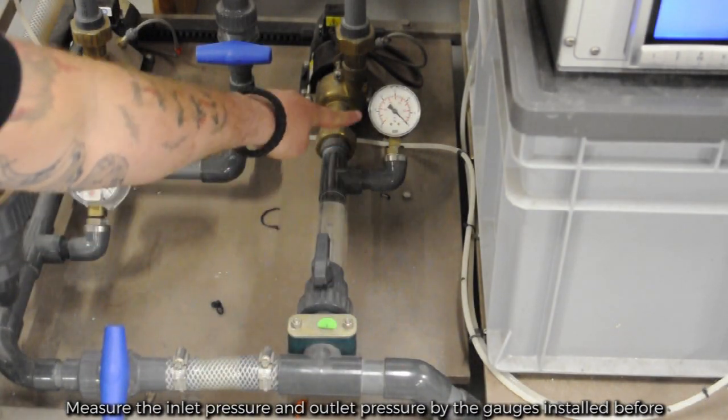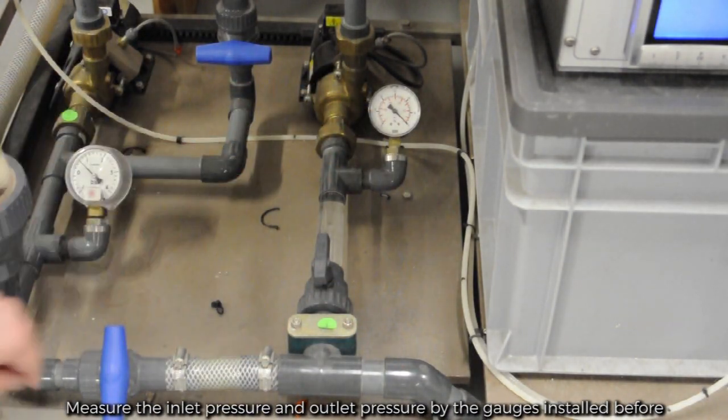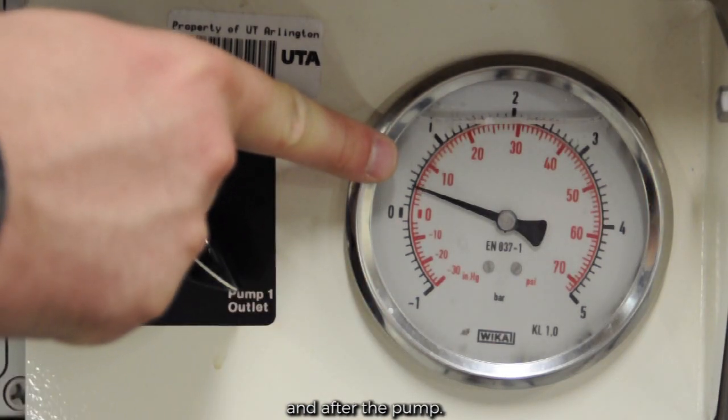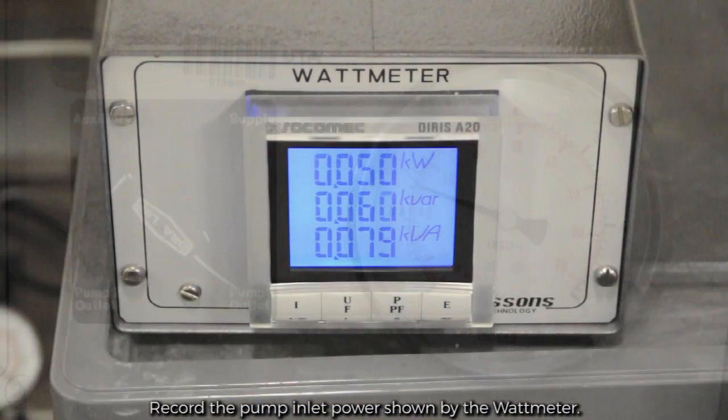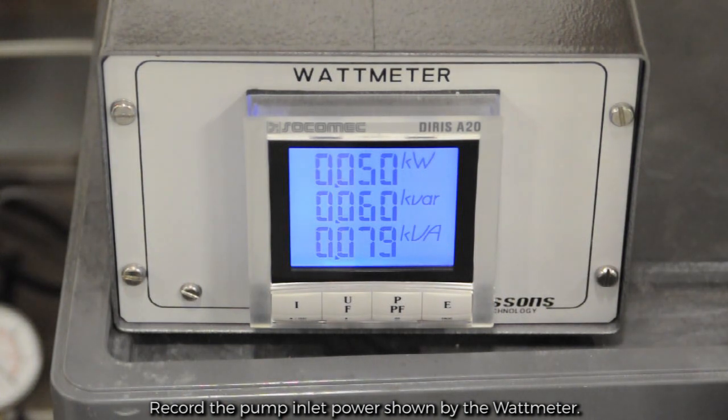Measure the inlet pressure and outlet pressure by the gauges installed before and after the pump. Record the pump inlet power shown by the wattmeter.